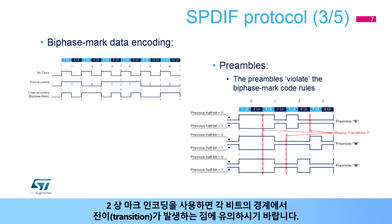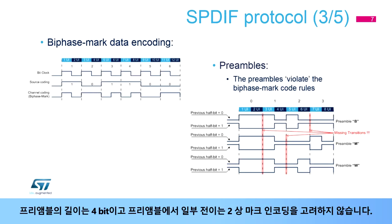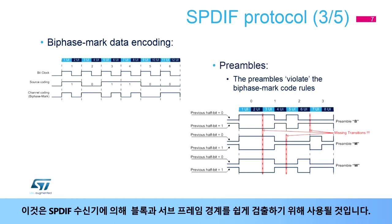Note that with biphase mark encoding, there is a transition at the boundary of each bit. The preamble length is four bits, and some transitions on the preamble do not respect biphase mark encoding. This will be used by the SPDIF receivers to easily detect the block and subframe boundaries.